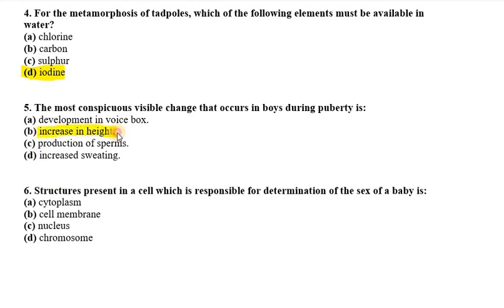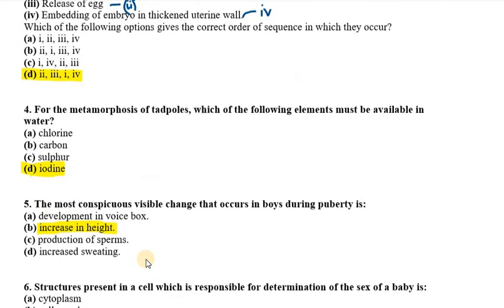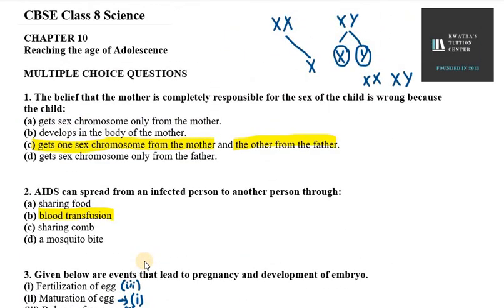The sixth question asks: what structure present in a cell is responsible for the determination of the sex of a baby? The right option is chromosome. The chromosome determines whether the offspring will be a boy or a girl. These are the questions and answers of chapter 10, reaching the age of adolescence. Thank you for watching — please like, share, and subscribe.